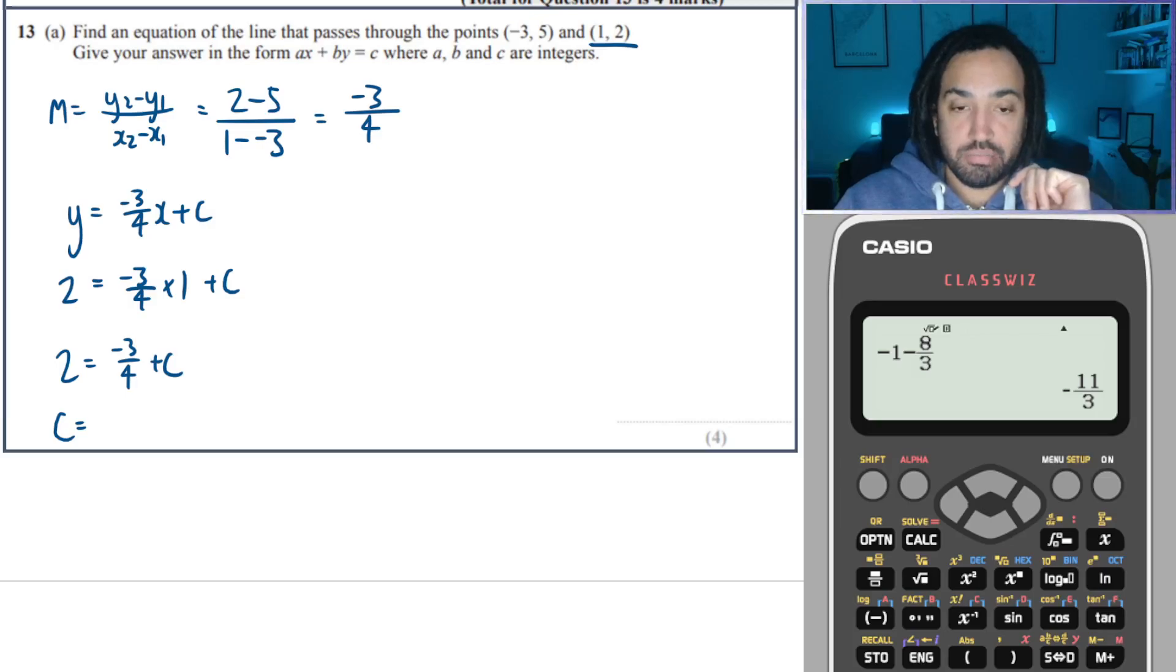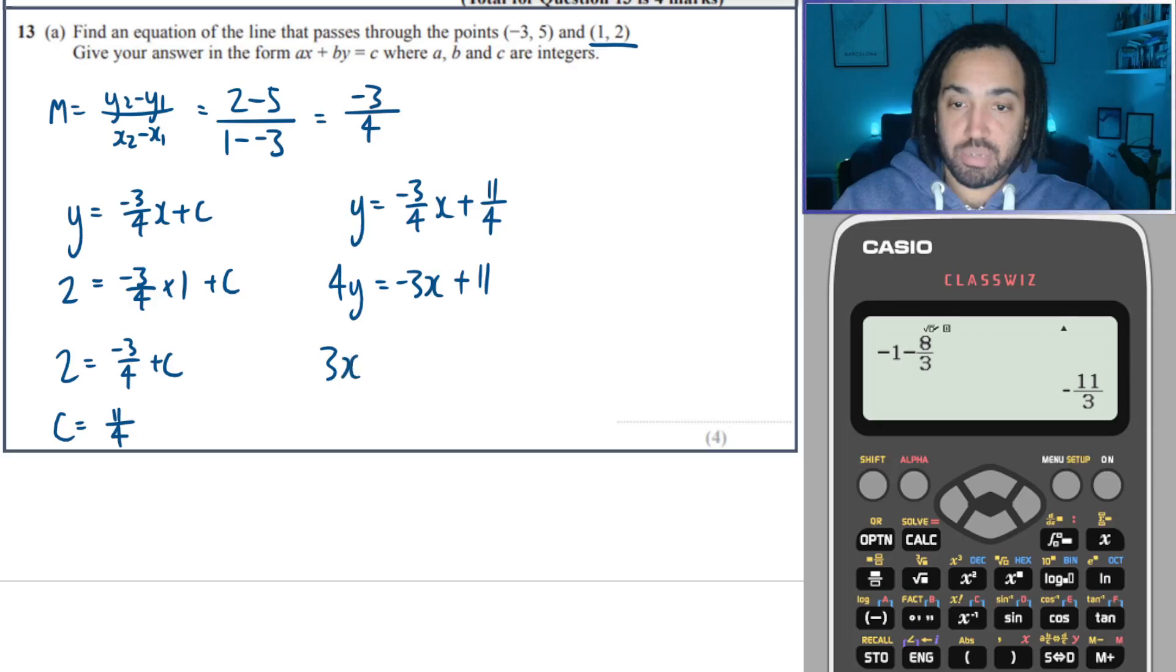So the c value will be 2 plus 3 quarters, which is 11 over 4. So therefore, y is equal to minus 3 over 4x plus 11 over 4. Times everything through by 4. Gives me this. And then move the x to the other side. It becomes positive. So I get this job done.